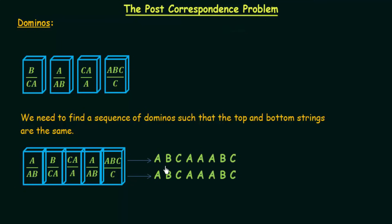Writing out the full string, the top reads A, B, C, A, A, A, B, C and the bottom also reads A, B, C, A, A, A, B, C. The top and the bottom are the same, so we have found a solution to this set of dominoes in this PCP.